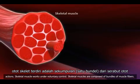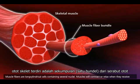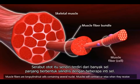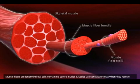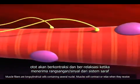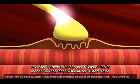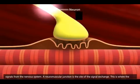Skeletal muscles are composed of bundles of muscle fibers. Muscle fibers are long cylindrical cells containing several nuclei. Muscles will contract or relax when they receive signals from the nervous system.